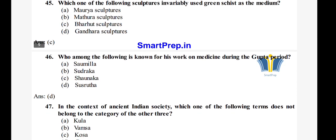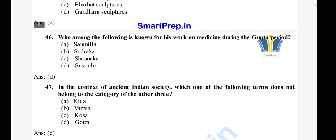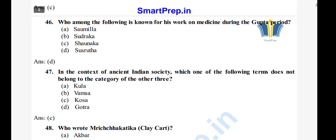Question 47: In the context of ancient Indian society, which one of the following terms does not belong to the same category as the other three? Options: A) Kul, B) Vamsha, C) Kosha, D) Gotra. The right answer is option C, Kosha. Kul, Vamsha, and Gotra are all genealogy-related terms.